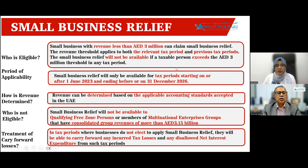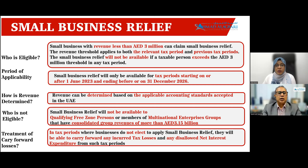However, qualifying free zone persons or members of multinational enterprise groups that have consolidated group revenues of more than 3.15 billion AED are not eligible for the small business relief. Also, in tax periods where businesses do not elect to apply small business relief, they will be able to carry forward any incurred tax losses and any disallowed net interest expenditure from such tax periods.